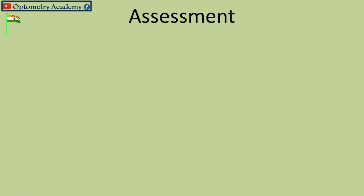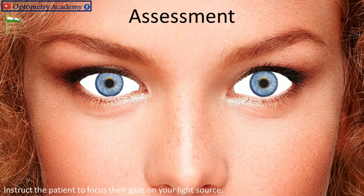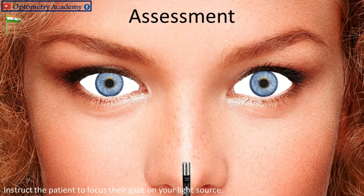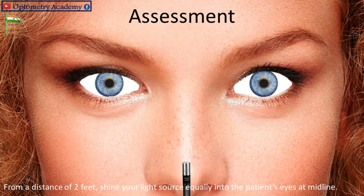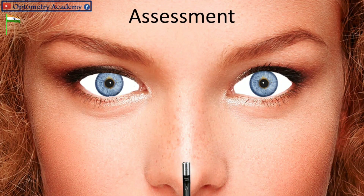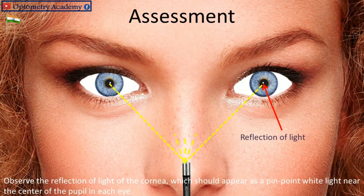Assessment: Use a point light source such as a penlight or Finhoff transilluminator. Instruct the patient to focus their gaze on your light source. From a distance of two feet, shine your light source equally into the patient's eyes at midline. Observe the reflection of light off the cornea, which should appear as a pinpoint white light near the center of the pupil in each eye.